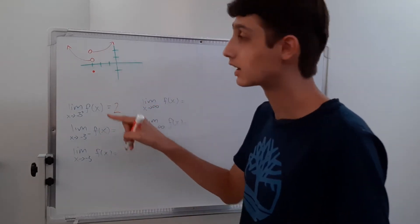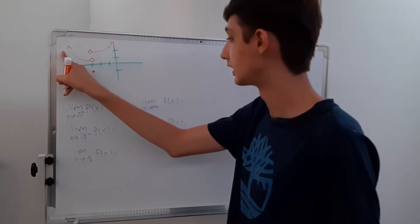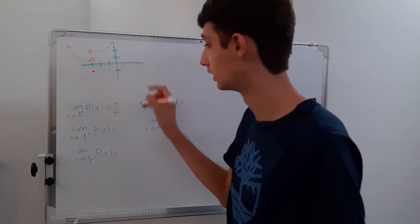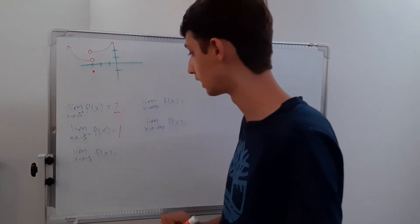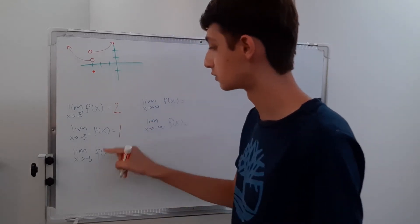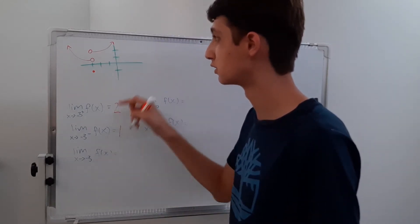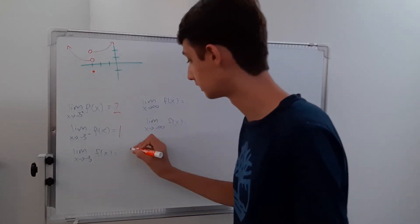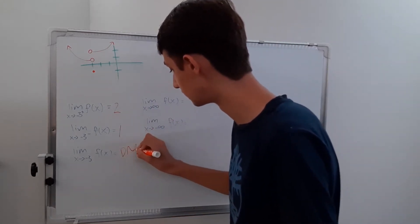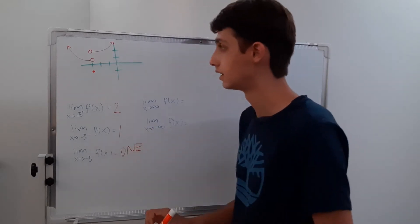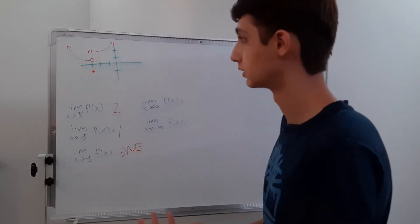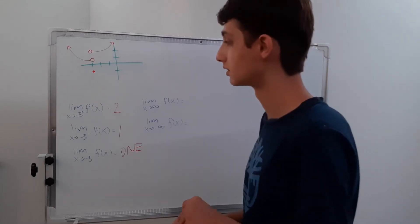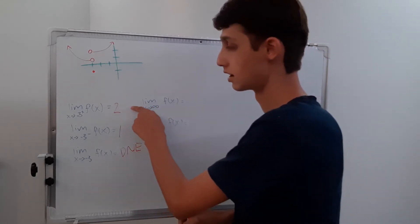From the negative direction — which is going to be this side — it gets closer and closer, and it gets down to one. Then as x approaches negative three from both directions, these two aren't the same. Therefore, this limit does not exist, even though f of negative three is negative one.